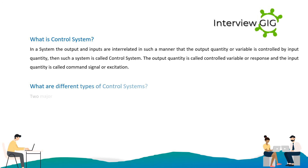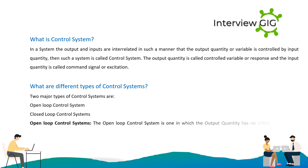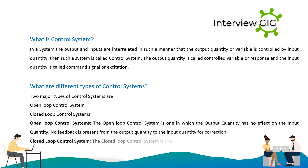There are two major types of control systems: open loop and closed loop. An open loop control system is one in which the output quantity has no effect on the input quantity — no feedback is present from the output to the input for correction.